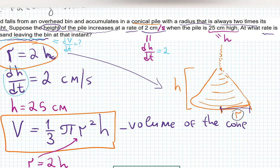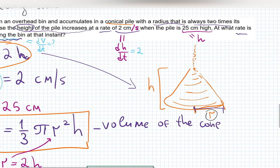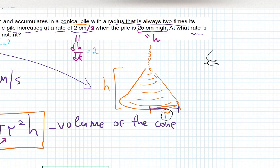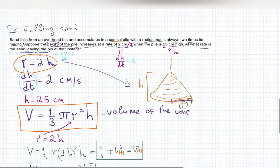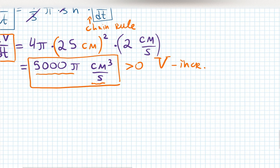Consider honey poured from a jar — it accumulates in spirals because of viscosity, becoming wider faster than taller. The consistency of the material matters. Sand behaves differently from honey or water, which doesn't accumulate at all. There can be more than just two rates, and this problem shows that in general.